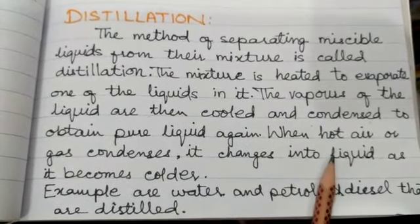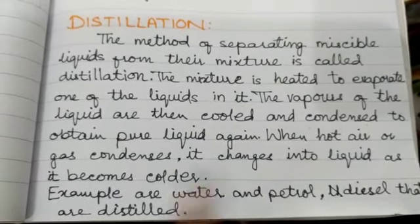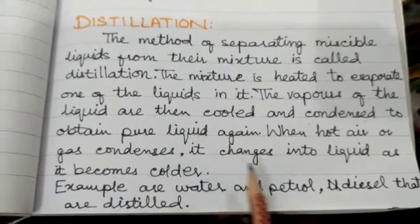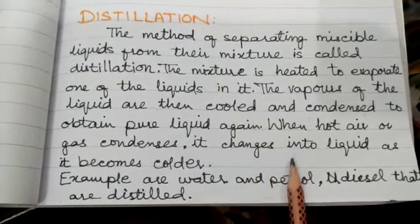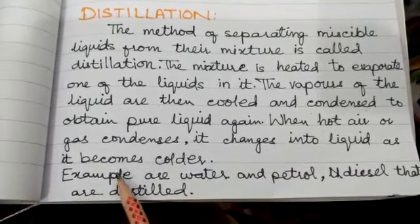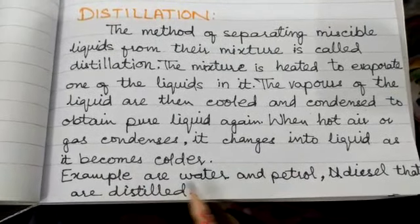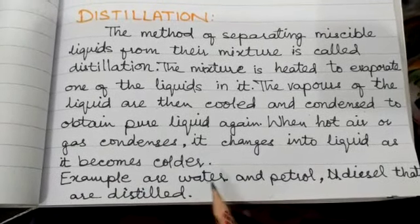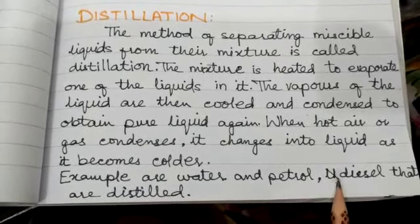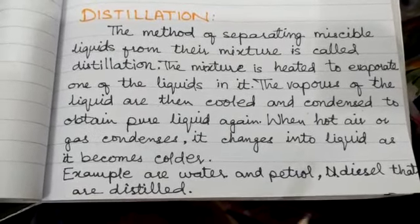When hot air or gas condenses, it changes into liquid as it becomes colder. Examples are water and petrol/diesel, which are distilled.